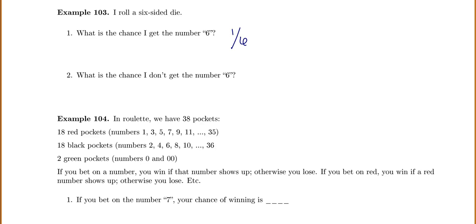The die has numbers one through six — that's always what we're assuming unless stated otherwise. What is the chance that I don't get the number six? Getting the number six and not getting the number six are complements.